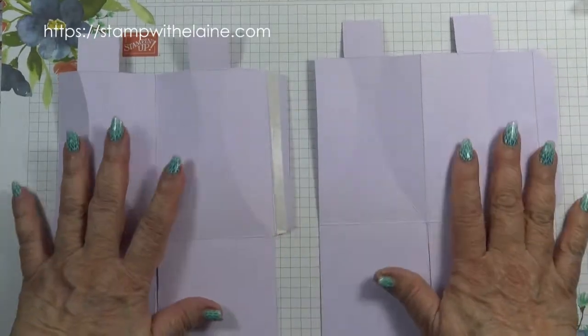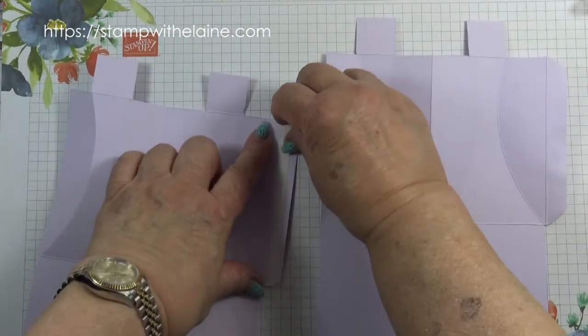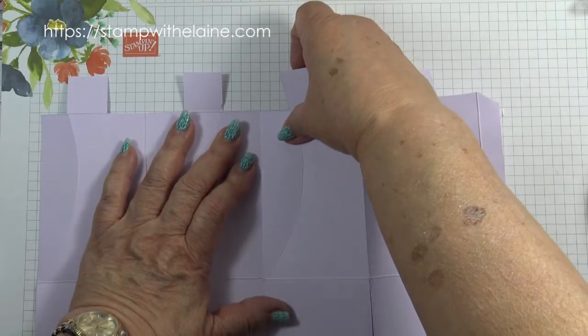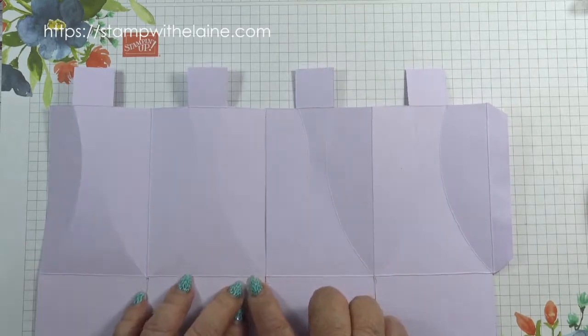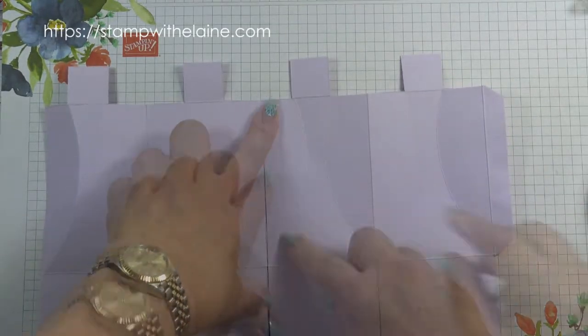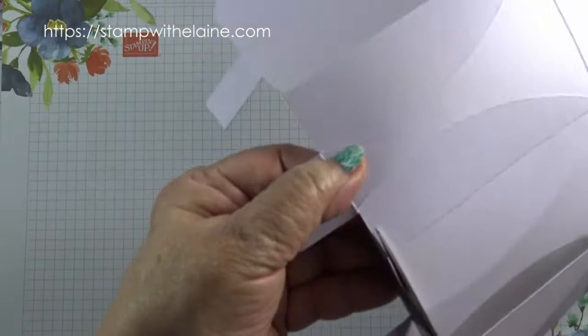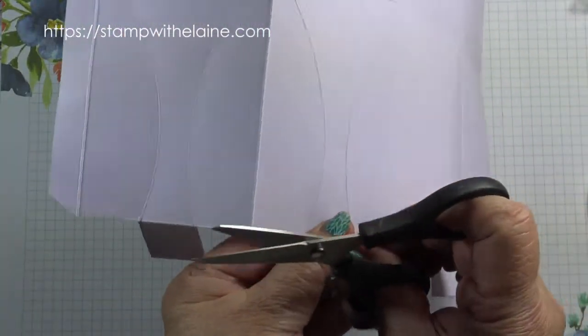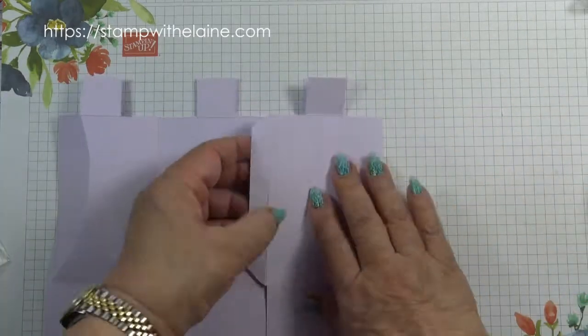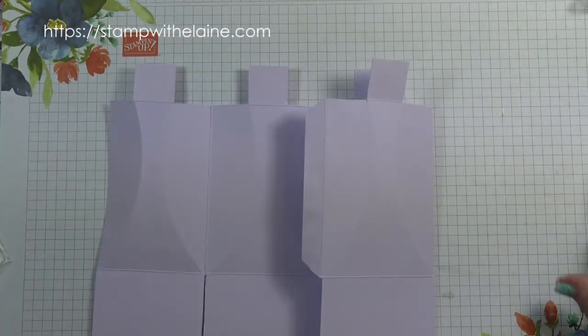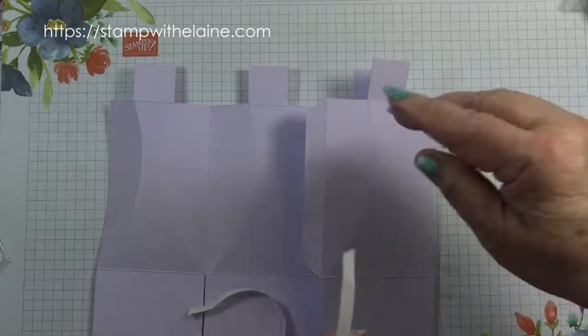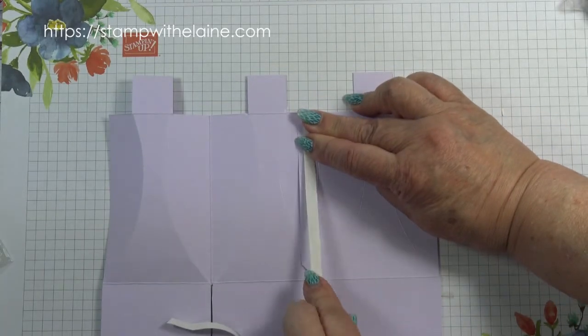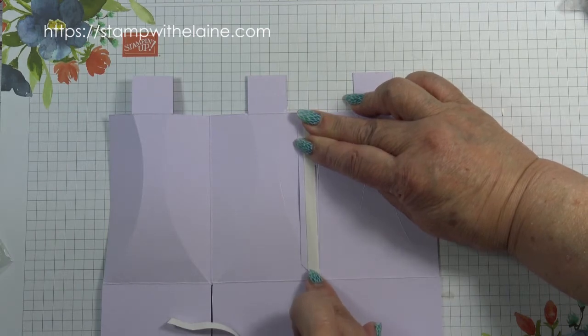Now that you've reinforced your creases, you want to join these together. Make sure they meet up and that your curves are in line. Fold that over and put double-sided tape on there or tearing tape so that you can join them together.